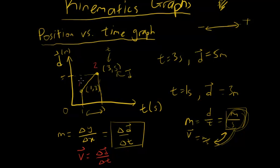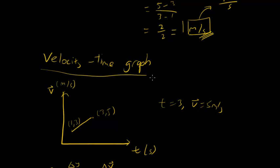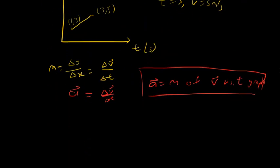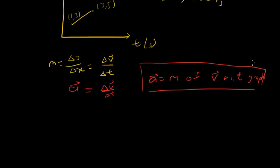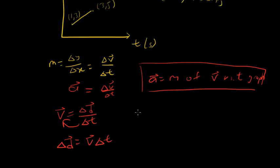So we can see that the slope of a position-time graph is velocity, and the slope of a velocity-time graph is acceleration — and we see how that flows from displacement to velocity to acceleration through graphs. Now, can we go backwards? Can we derive displacement from the velocity-time graph? Yes. Starting from velocity = Δd/Δt, we get Δd = v × Δt.